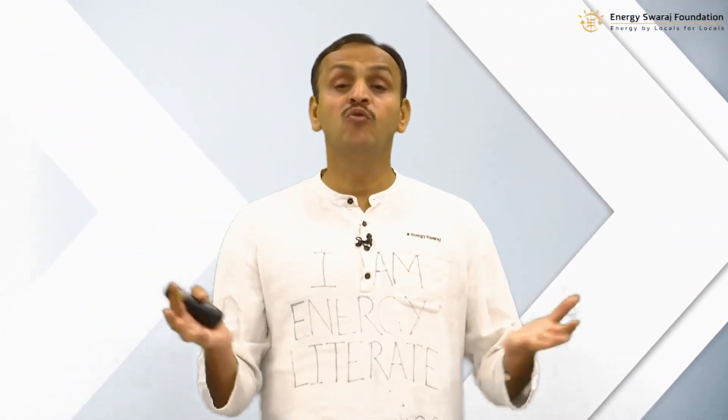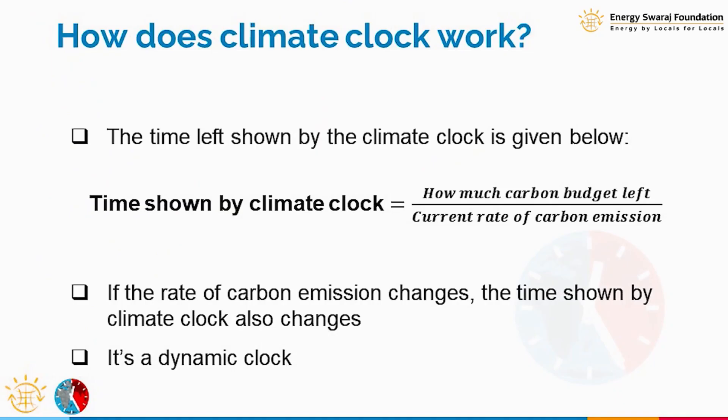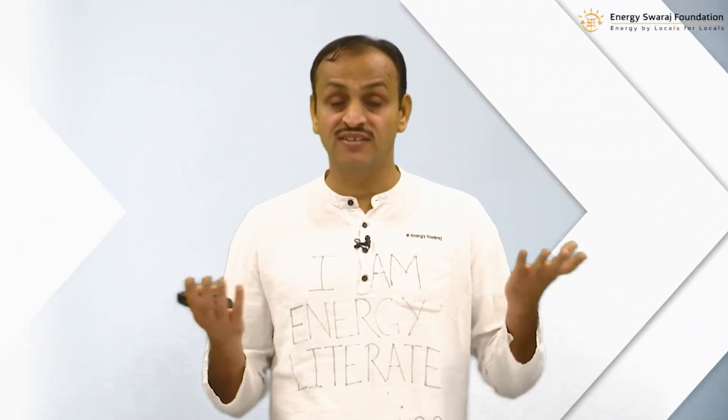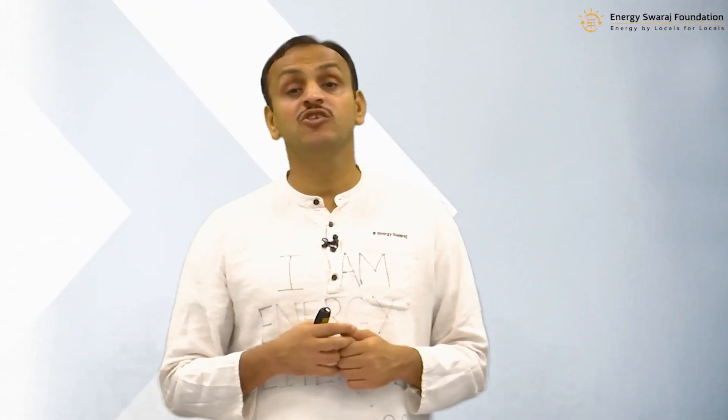This is a global parameter — not for one country but the whole world. How much carbon-based fuels we are using determines how much carbon dioxide we are releasing into the atmosphere. The time shown by the climate clock is dynamic: if the rate of emission is high, the clock runs faster; if the rate is low, the clock runs slower. The speed changes with the denominator — the rate at which we are emitting carbon dioxide.